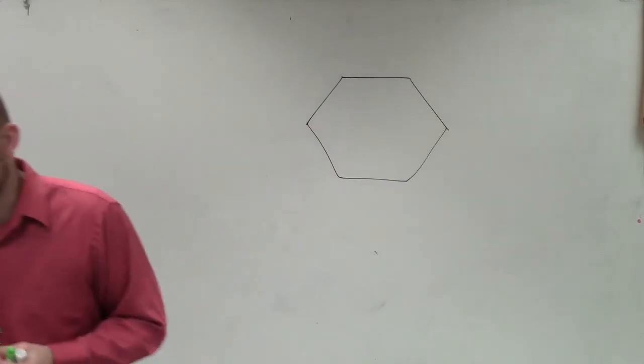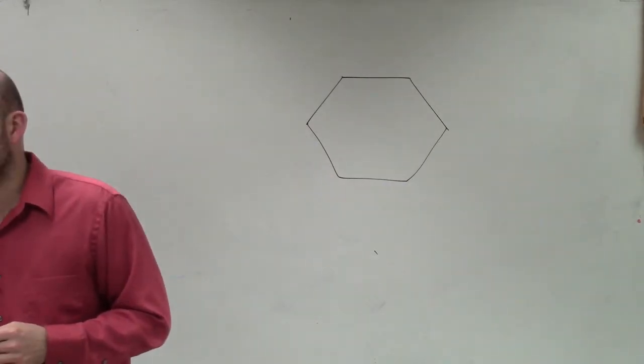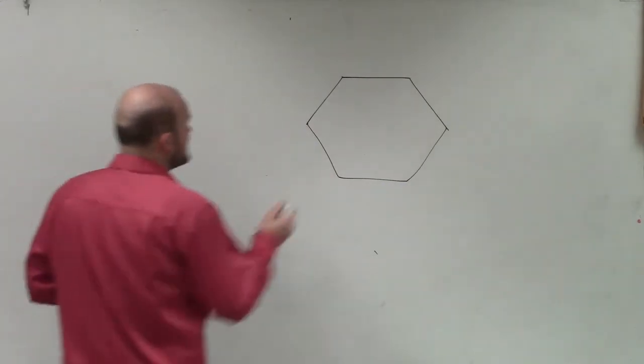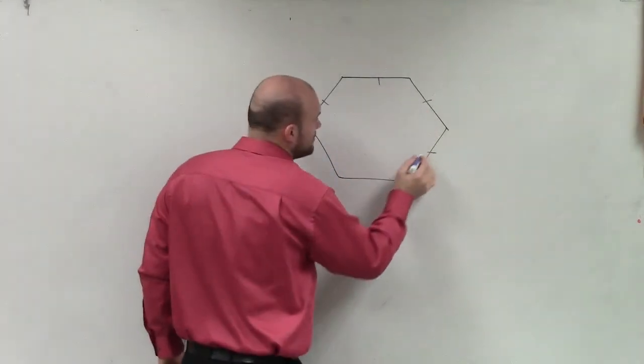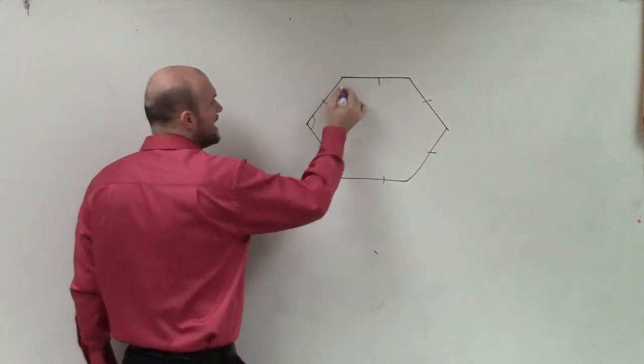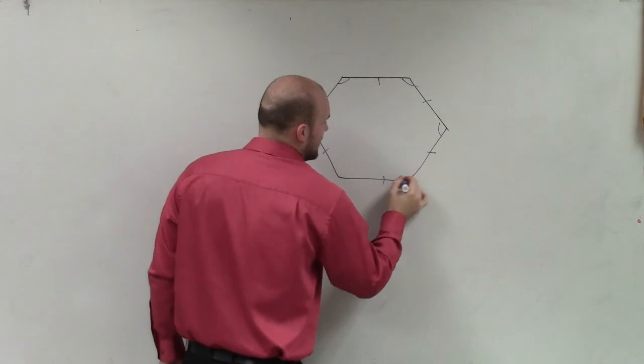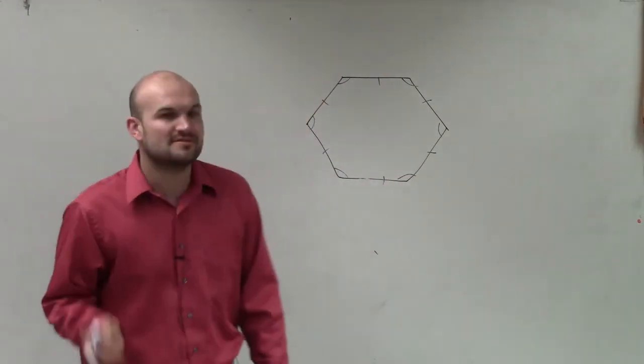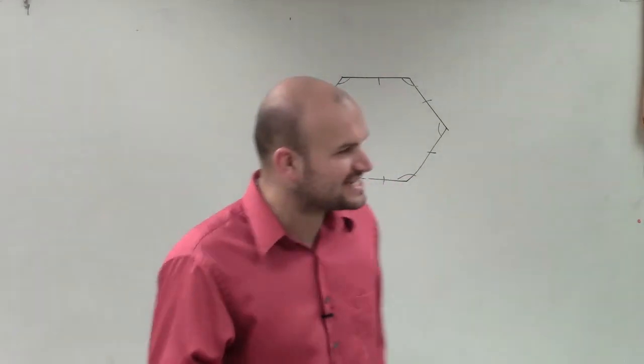Now, if you guys remember, a regular hexagon has all the sides equal in measurement and all the angles equal in measurement. And the question that they're asking is find the measure of each exterior angle.